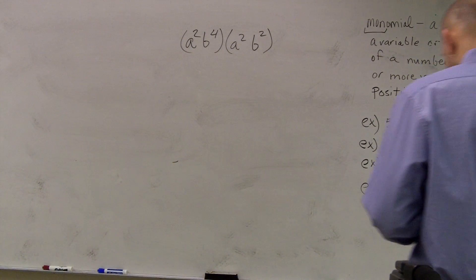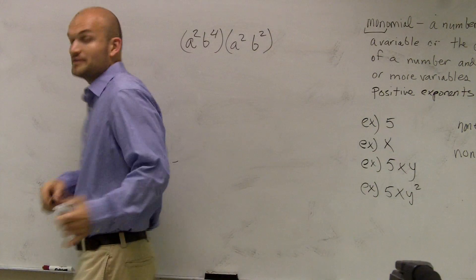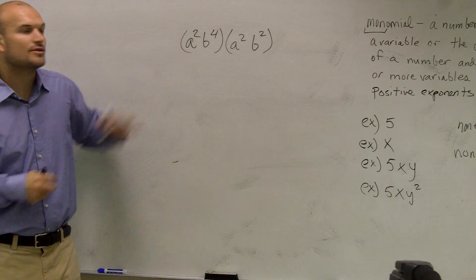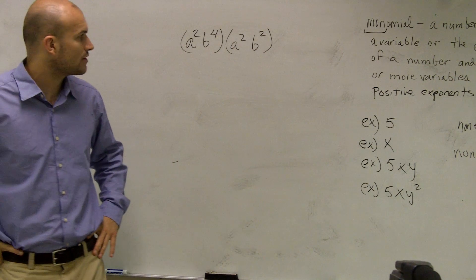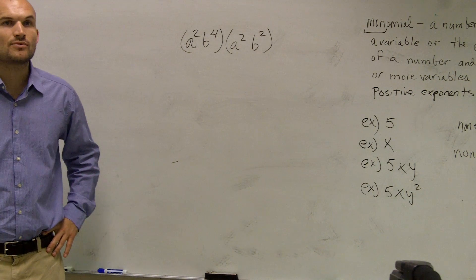Good. So if I was going to multiply these binomials, the first thing I would take a look at is I have a squared times b to the fourth times a squared times b squared.